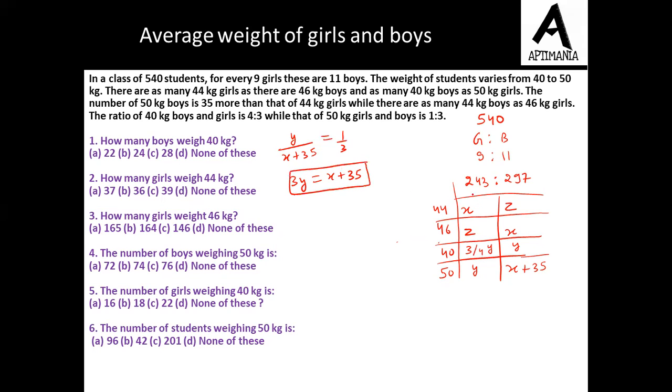Further, the total of this must be equal to 243. So this is x plus z plus 7 by 4 of y, which equals 243. And the total of boys must be equal to 297. So we have 2x plus y plus z plus 35 equals 297. Now let us subtract equation 2 from equation 3.